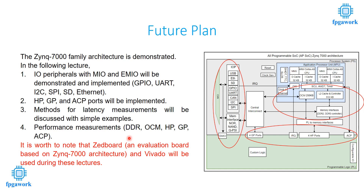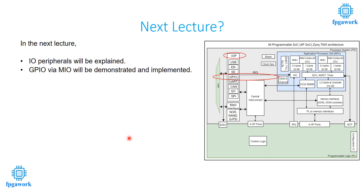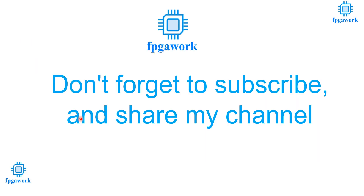I will use the ZedBoard and Vivado in the following lectures. In the next lecture, I will explain a detailed version of the peripherals and implement GPIO in Vivado, showing the results. It is worth noting that GPIO will be implemented via Multiplexed IO first, and in the video after that, I will implement GPIO via EMIO. Step by step I will implement all the components and clear all your concepts and doubts. Thank you very much — please subscribe and share the channel. Thank you, take care.